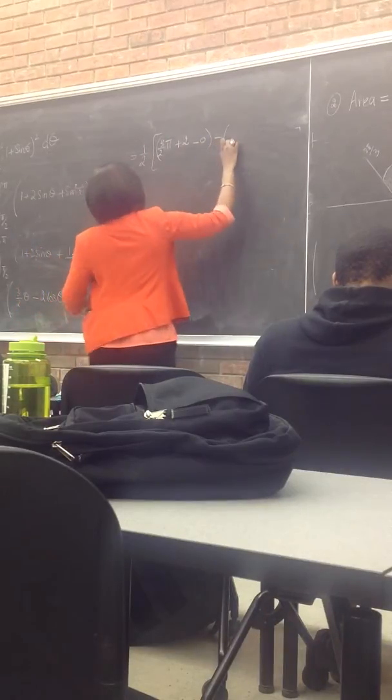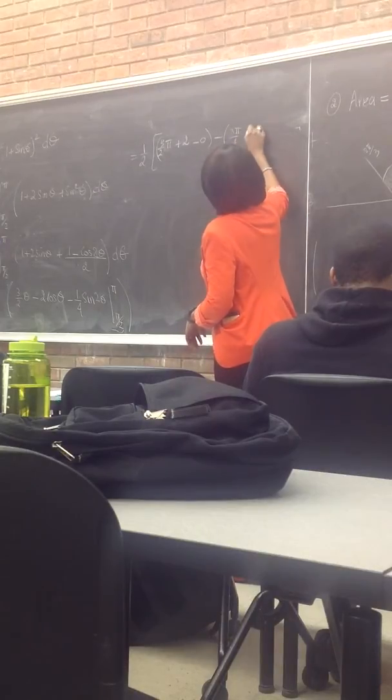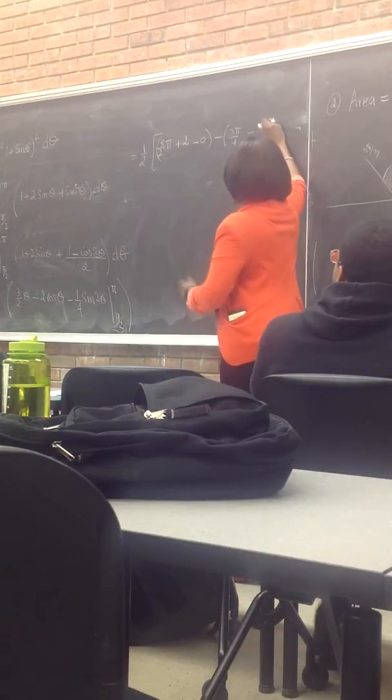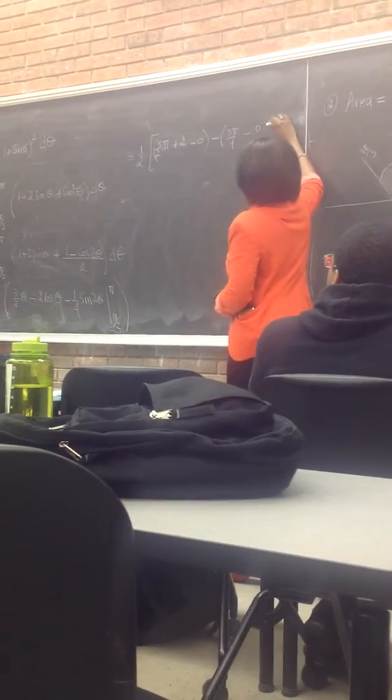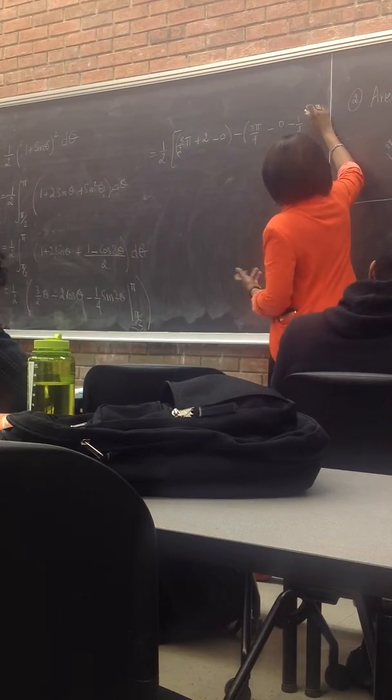Minus, at π/2, we have 3 halves times π/2 is 3π over 4. And then minus 1 over 4. Sine of π would be 0.